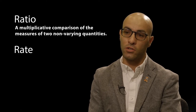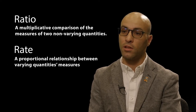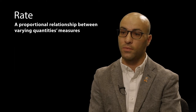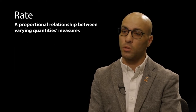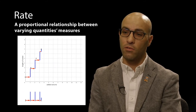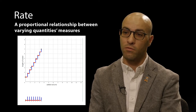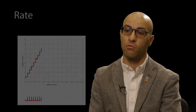A quantitative understanding of constant, average, and instantaneous rate of change relies upon productive conceptualizations of ratio, rate, and continuous variation. A ratio is a multiplicative comparison of the measures of two non-varying quantities, while a rate defines a proportional relationship between varying quantities' measures. A rate is therefore an invariant multiplicative relationship between the measures of co-varying quantities. Constructing a rate involves images of variation, as well as the expectation that as two quantities vary, multiplicative comparisons of their measures remain constant.